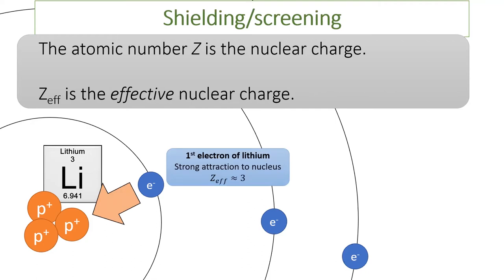The first electron is right up next to the protons in the nucleus and feels the full force of the nucleus's 3+ charge. In other words, it feels an effective nuclear charge of around 3.